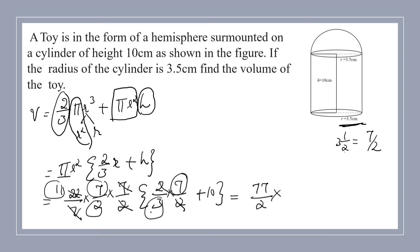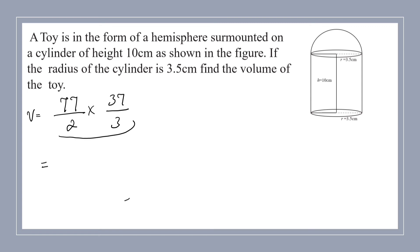So LCM is 3. Here, 7 plus 10 times 3, that is 30. That is equal to 77/2 times 37/3. Here, if we multiply denominator, we get 6.